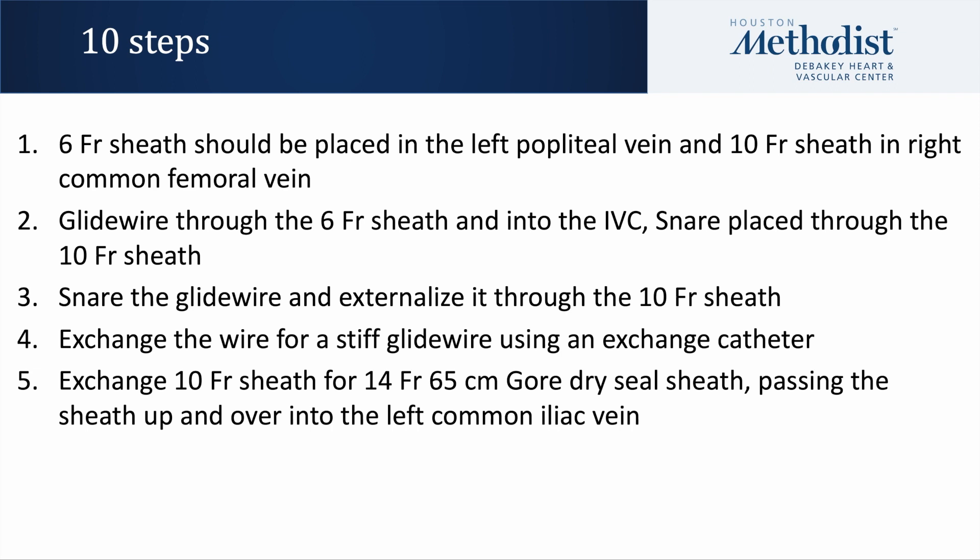Summarized here are the ten steps for this procedure. A 6-French sheath was placed in the left popliteal vein and a 10-French sheath in the right common femoral vein. The glide wire was then passed through our 6-French sheath and into the inferior vena cava, and a snare was placed through the 10-French sheath. The glide wire was then snared and externalized through the 10-French sheath and exchanged for a stiff glide wire using an exchange catheter. We then exchanged our 10-French sheath for a 14-French 65-centimeter CGore Dry Seal sheath, passing the sheath up and over the IVC confluence and into the left common iliac vein.